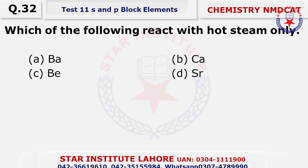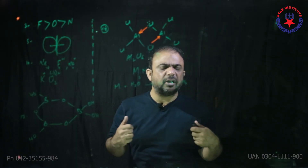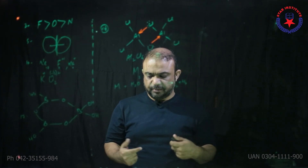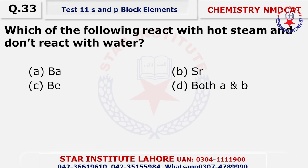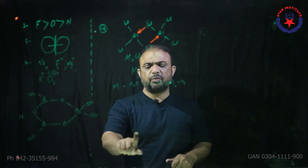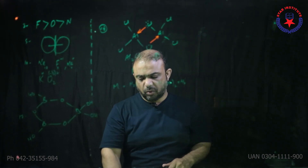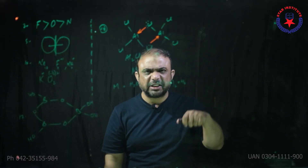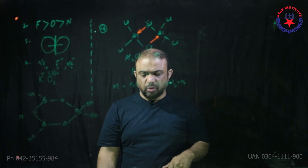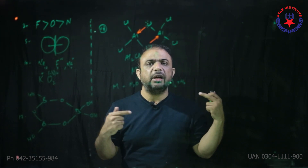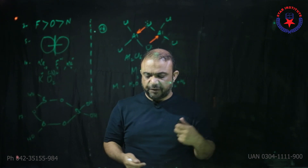Question number 32: Which of the following reacts with hot steam? Beryllium can react under hot conditions, while the rest react more easily in comparison. Question number 33: Which reacts with hot steam but does not react with water? Beryllium is so stable that it reacts with hot steam but does not react with water. Question number 34: Which oxide is more acidic in nature? The least basic is most acidic — beryllium oxide. Choice A.